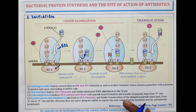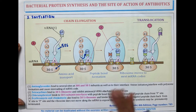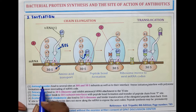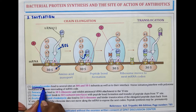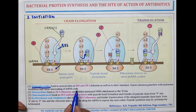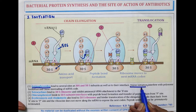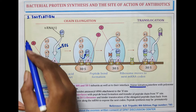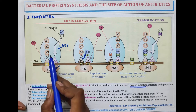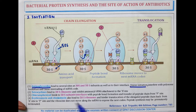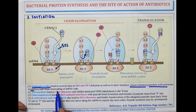Now the antibiotics which act on these steps. The first one is aminoglycoside. Aminoglycoside binds to several sites at the 30S as well as 50S subunit as well as to their interface. Aminoglycoside freezes the initiation step. This step where amino acids are added is frozen by aminoglycoside, and it also interferes with polysome formation and causes misreading of mRNA codon.